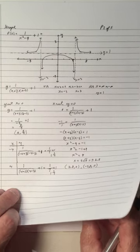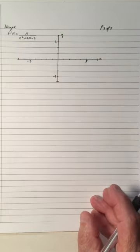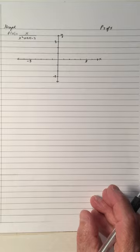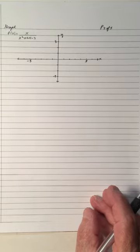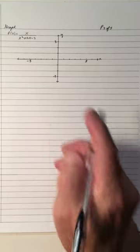Again, by factoring the trinomials and binomials, we make it easier to graph. We can see where the x-intercepts and y-intercepts are.